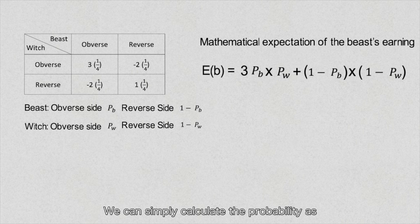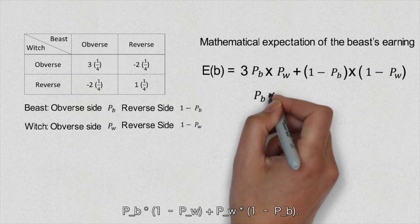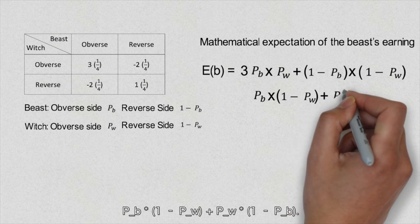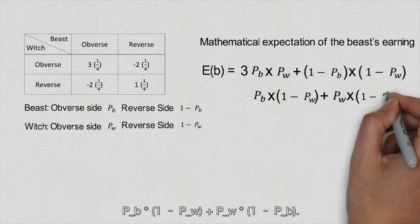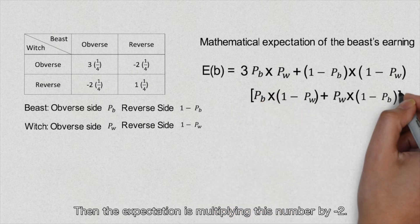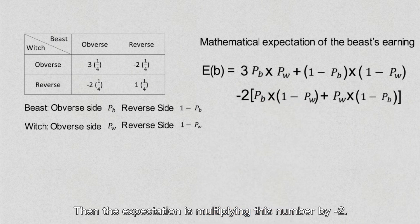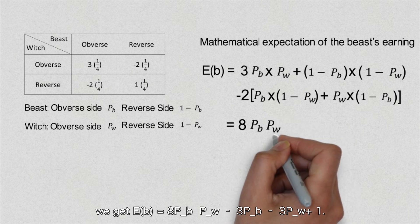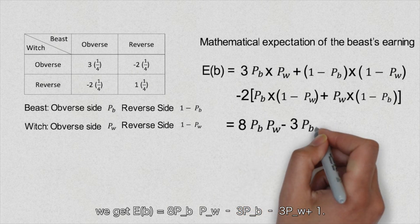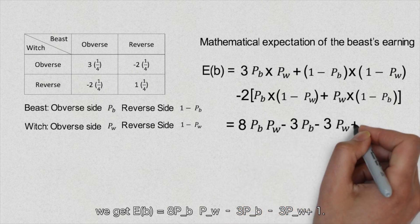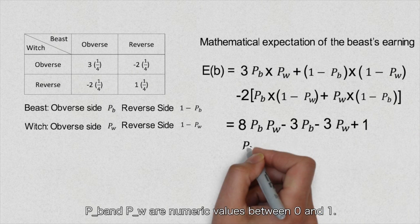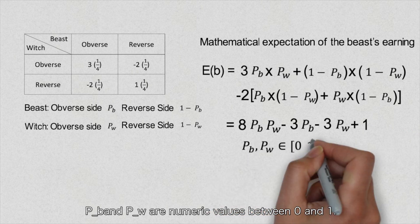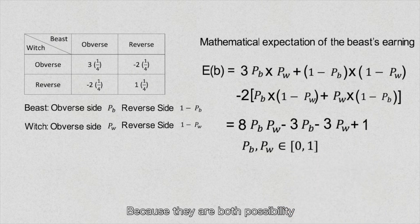The beast will lose money for both the third and the fourth cases. We can simply calculate this probability as P_b times 1 minus P_w plus P_w times 1 minus P_b. Then the expectation is multiplying this number by negative 2. After simplifying this equation, we get the expectation of the beast E(b) equal to 8P_b times P_w minus 3P_b minus 3P_w plus 1. P_b and P_w are numeric values between 0 and 1 because they are both probabilities.